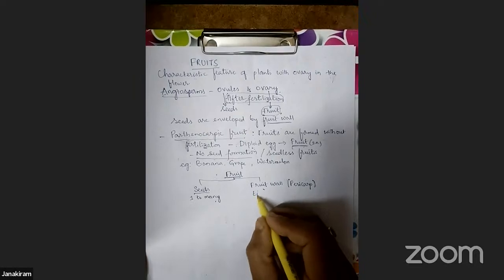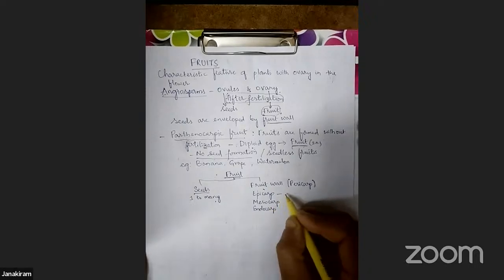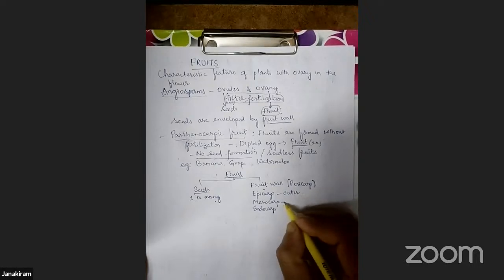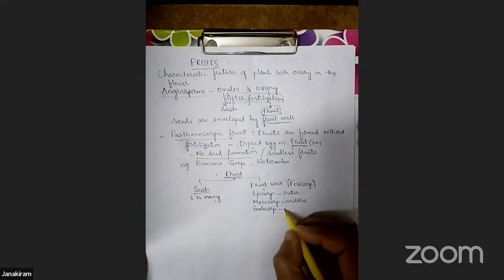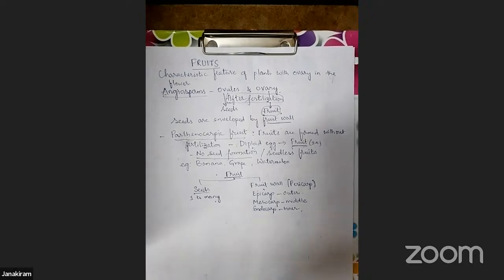The pericarp has three regions: epicarp, mesocarp, and endocarp. Epicarp is the outermost layer, mesocarp is the middle layer, and endocarp is the inner wall of the pericarp. This differentiation is seen when the pericarp is fleshy in nature.